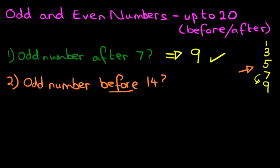Let me write this down. The number before 14 is 13. Now is 13 an odd number? Look over here. There's a 3. This one has a 3 as the units, so therefore this is an odd number. And the answer is correct. So the odd number before 14 is 13.